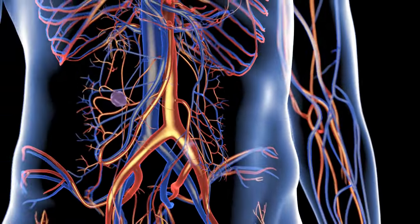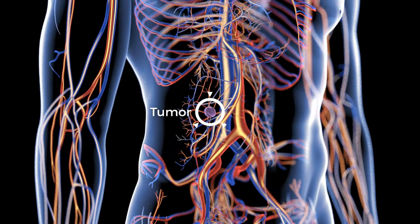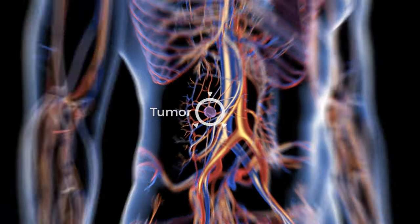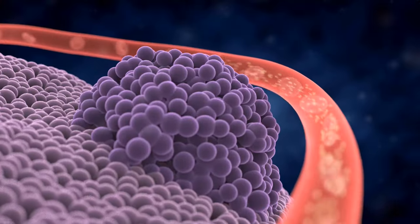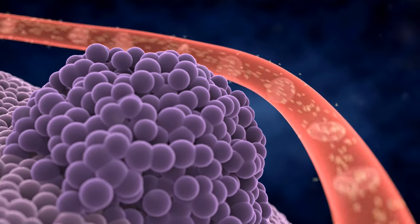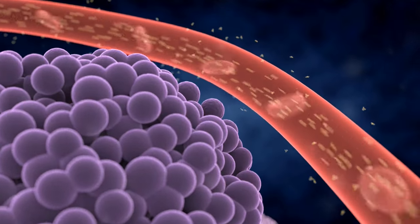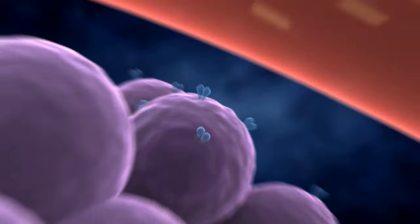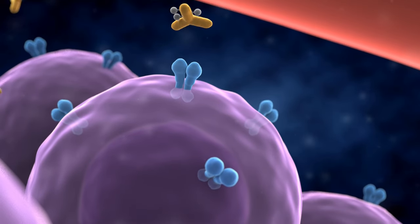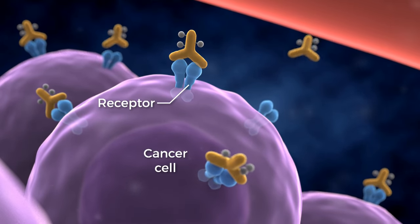It will travel through the bloodstream and eventually reach the site of the tumor. The conjugate will then leak out of permeable vessels near the tumor. It will bind to special receptors on the surface of cancer cells.